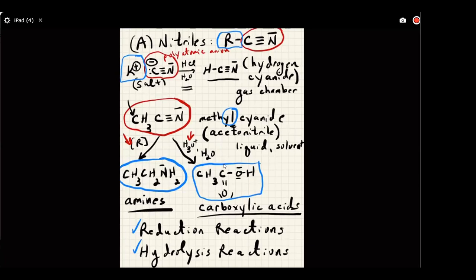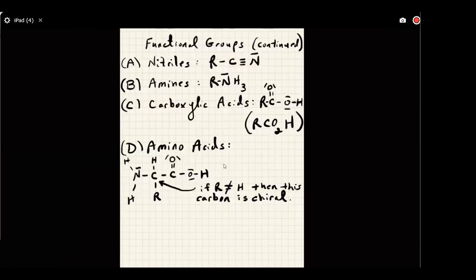I want to draw for you on our ChemSketch program an amino acid. Amino acids have two parts: an amine part and a carboxylic acid part — that's why it's called an amino acid. Do you see the carbon of the amino acid that I labeled with that green dot? If that carbon is something that's not a hydrogen atom, then that carbon is what we call chiral.